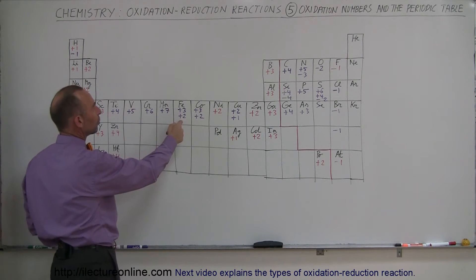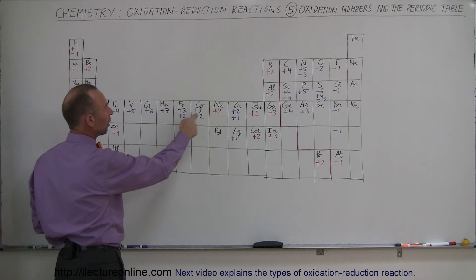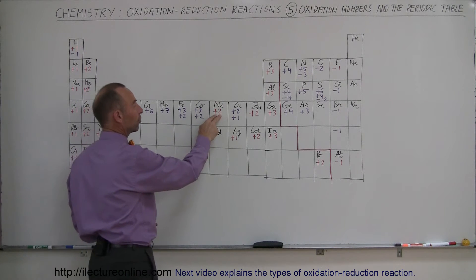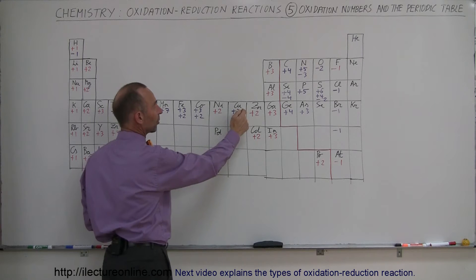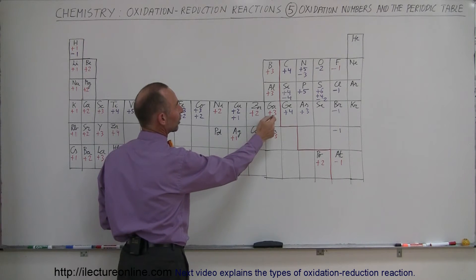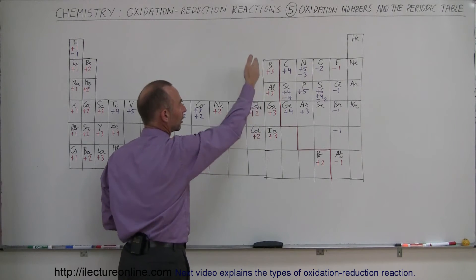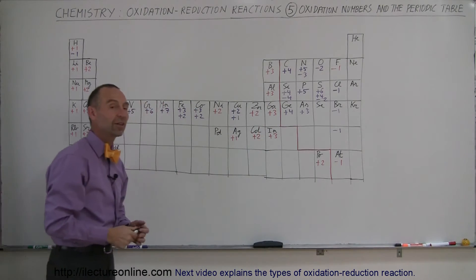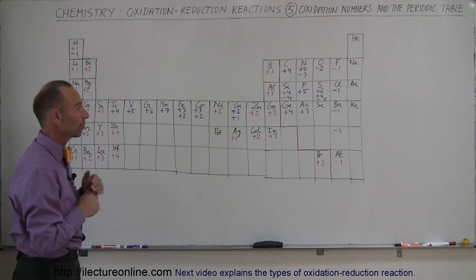But when we get to iron, it becomes more like plus three or plus two. Cobalt, plus three, plus two. Nickel only has a plus two oxidation number. Copper is plus two, plus one. Zinc is plus two. And gallium is plus three as the only oxidation number. Just like boron and aluminum and indium, the only possibility there is that the oxidation state is plus three.